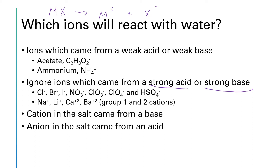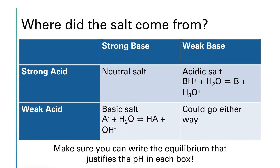Remember that the cation came from a base. So if the cation came from a weak base, it's going to want to react with water. If the anion came from a weak acid, the anion will try to react with water. To predict the pH of a salt solution, we really need to identify what acid and what base reacted to produce that salt.